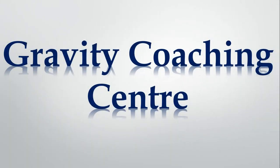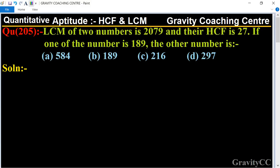Welcome to our channel Gravity Coaching Center. Quantitative Aptitude chapter HCF and LCM, question number 205. LCM of two numbers is 2079 and their HCF is 27. If one of the number is 189, the other number is what?